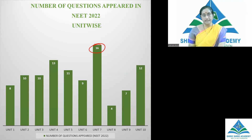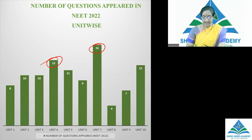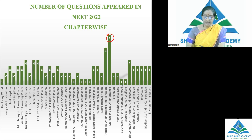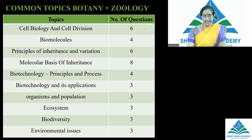The maximum number of questions appeared from Unit 7, and then next stood plant physiology. From the ecology area, 12 questions appeared in 2022. If we come to the questions related to the chapter-wise breakdown, the maximum number of questions appeared from the molecular basis of inheritance, and the second was the principles of inheritance and variations. Coming to questions related to both botany and zoology — cell biology and cell division: